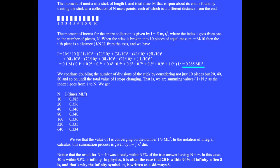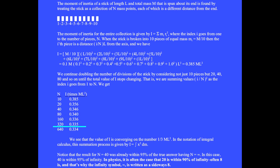For this collection of 10 mass points, will the total moment of inertia I change if we change the number of point masses n? The procedure is to continue doubling the number of divisions of the stick — not just 10 pieces, but 20, 40, 80, and so on — until the total value of I stops changing. We are summing values i over n squared as the index goes from 1 to n. When n equals 10, I equals 0.385 ml squared. When we double n from 10 to 20, the value of I changes from 0.385 to 0.356. As we continue doubling, the value of I converges on 1 third ml squared.